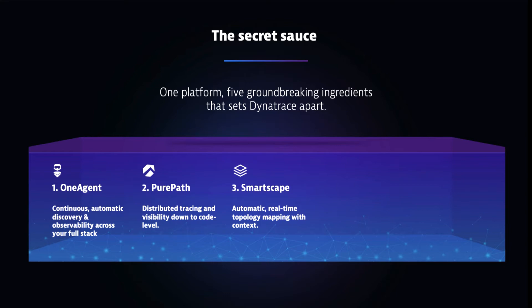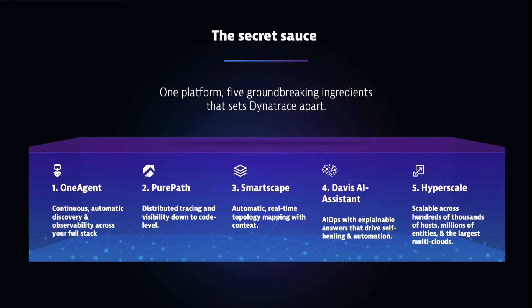All this data gets put into a topology model — SmartScape — showing context in real time without having to build it yourself. All data is constantly baselined and fed into our AI engine to help you understand impact automatically, without configuring individual thresholds, eliminating hundreds of alert rules and alert storms. We give you a smart answer. Dynatrace is proven to scale across thousands of hosts and millions of entities, working with some of the largest customers in retail, banking, insurance, and other industries.